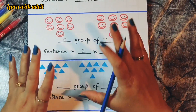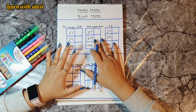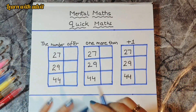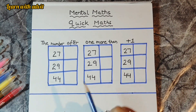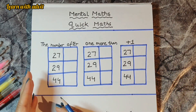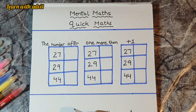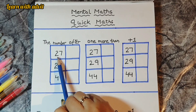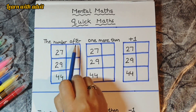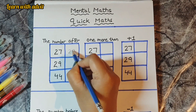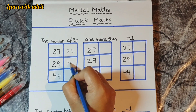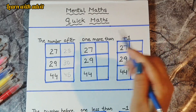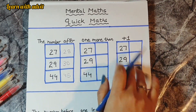This is the sheet for quick maths — mental maths. Mental maths is needed to solve problems quickly on fingers and in their mind. This question covers after the number and before the number. We can give after-number questions in three ways: the number after 27 is 28, after 29 is 30, after 44 is 45.